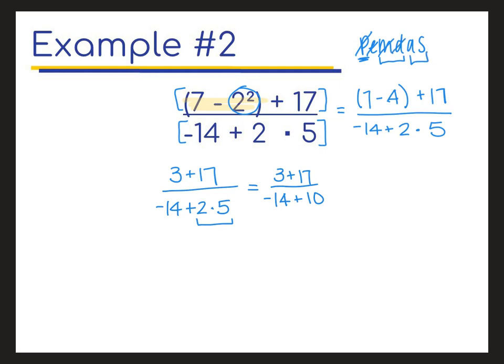So I no longer have any multiplication or division. So now I'm doing addition or subtraction from left to right. Remember, before I can do my final division, there's kind of these implied parentheses on the numerator and denominator. So I have to finish those first. So 3 plus 17 is 20. Negative 14 plus 10 is negative 4. And now finally, I can do that final division. So 20 divided by negative 4 is negative 5.